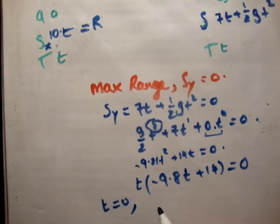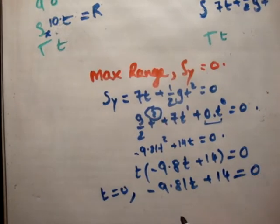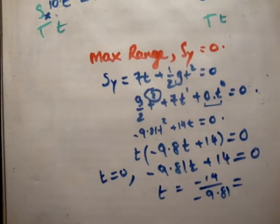So t is equal to 0, and also minus 9.81t plus 14 is equal to 0. And as a result, t is equal to minus 14 over minus 9.81, which is 14 divided by 9.81, equals 1.42 seconds.